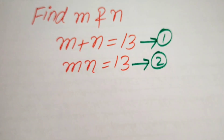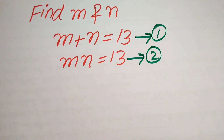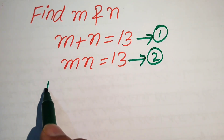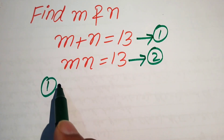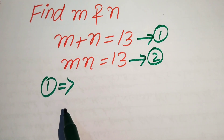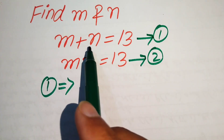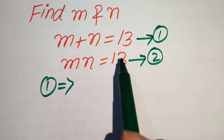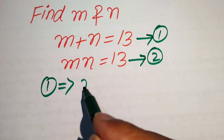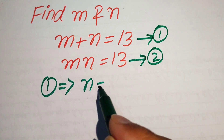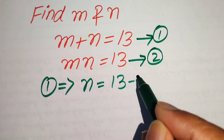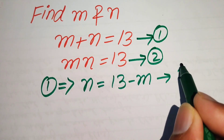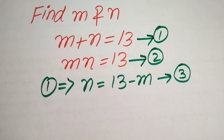In order to find the values of m and n, we first focus on equation number 1. Equation number 1 states that m plus n equals 13. We move m to the right-hand side, giving us n equals 13 minus m. We call this equation number 3.